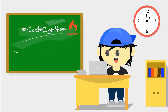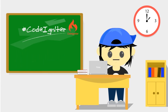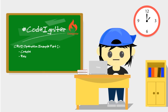CodeIgniter is an open source software rapid development web framework for use in building dynamic websites with PHP. In this video, we'll learn the CRUD operation example. For now, I'll only show how to make the create and read operation. I'll make the tutorial of update and delete operation in the next video as soon as possible.